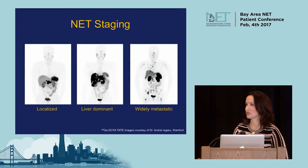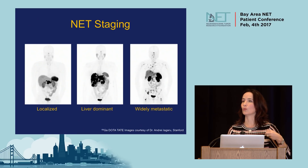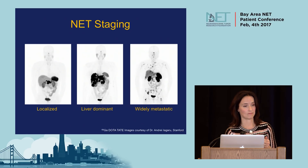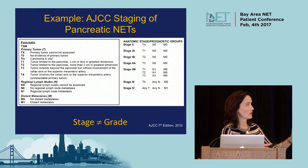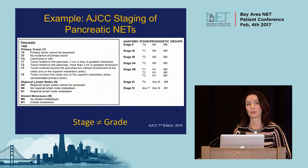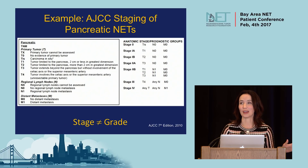The newer gallium-68 DOTATATE PET-CT offers much clearer image quality compared to the Octreoscan and uses the same lock-and-key principle to identify cancer spots. These scans are typically bright in well-differentiated neuroendocrine tumors. Staging uses the AJCC American Joint Committee on Cancer TNM system — tumor, node, and metastasis. Stages one through three are generally localized; stage four indicates the cancer has spread from its origin. Remember: stage does not equal grade.